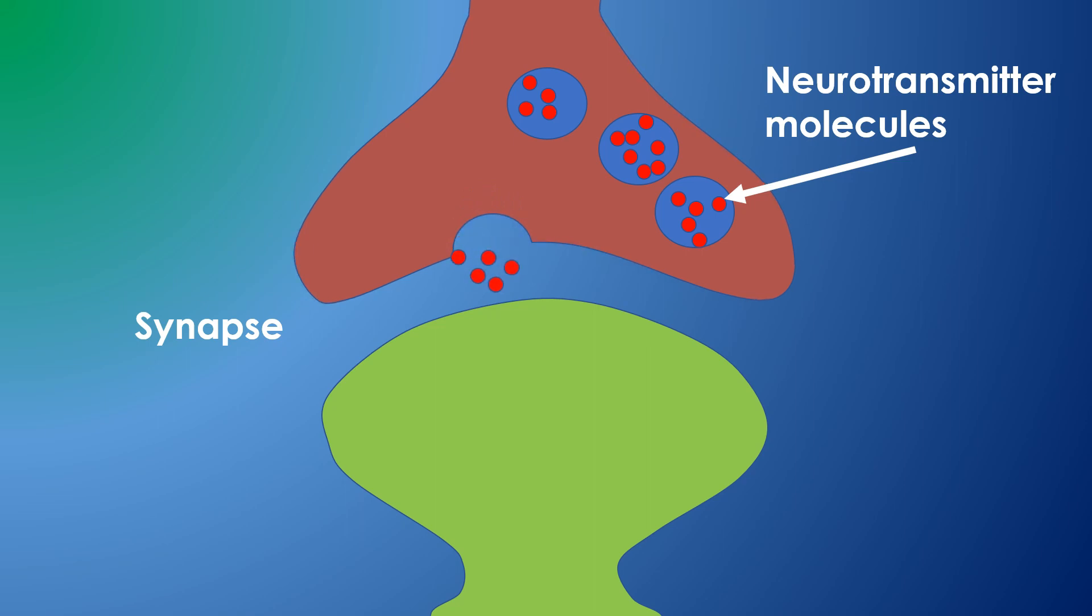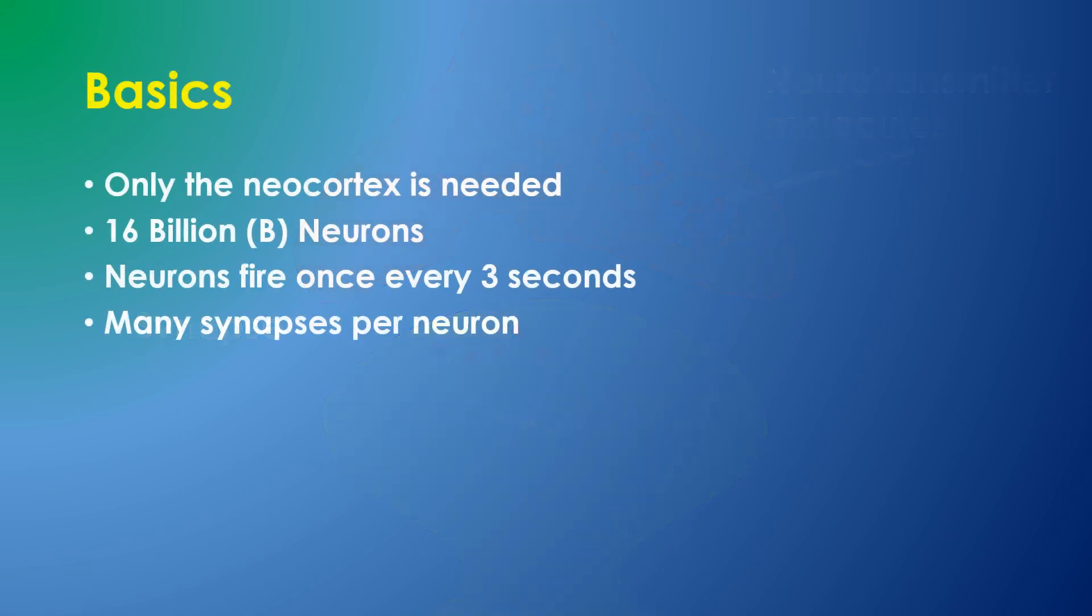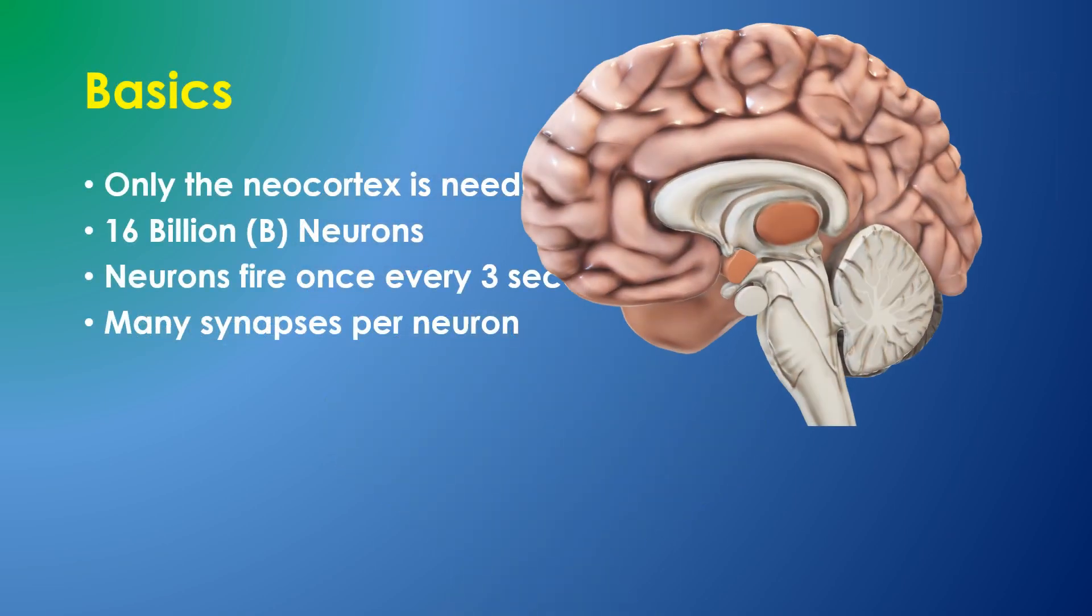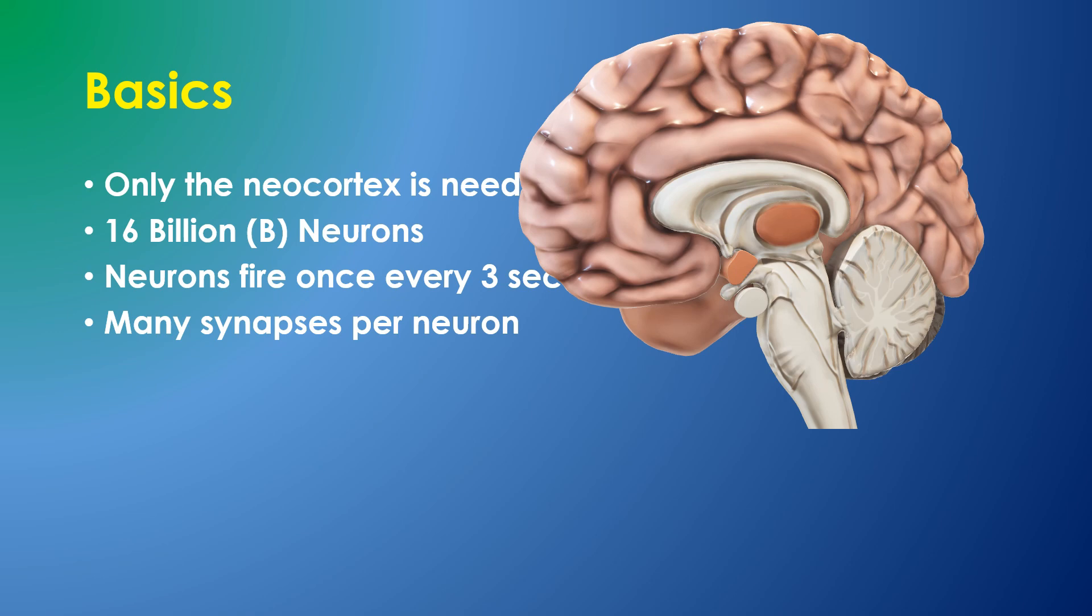To calculate the needed computation, we have to establish some ground rules and make some assumptions. First, let's presume that only the neocortex is needed for thinking, that other parts of the brain controlling coordination and autonomic functions will be developed on a different model.